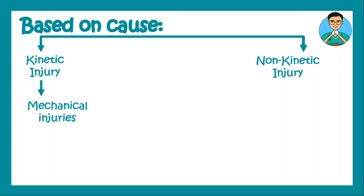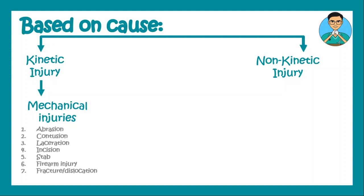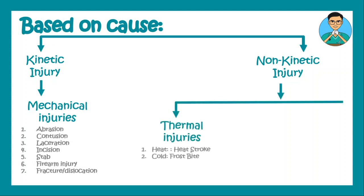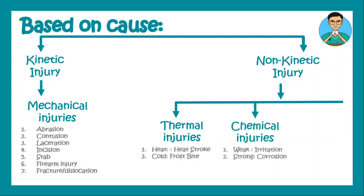Kinetic injuries are mostly mechanical injuries, which include abrasions, contusions, lacerations, incisions, stab injuries, firearm injuries, and fracture dislocation injuries. Non-kinetic injuries can be thermal injuries due to heat, as in heat stroke, or cold, as in frostbite. They can be chemical injuries — weak chemicals cause irritation, strong chemicals cause corrosion. Or miscellaneous injuries due to electrical, radiational, lightning, or blast factors.